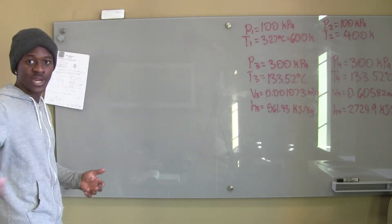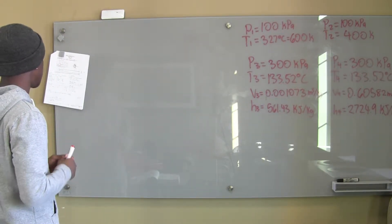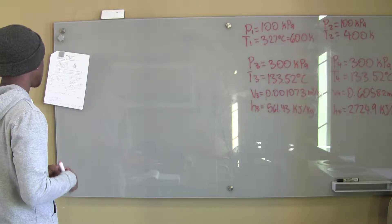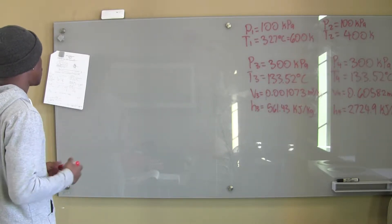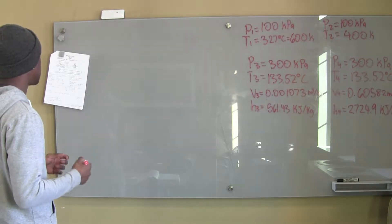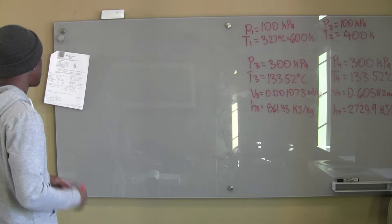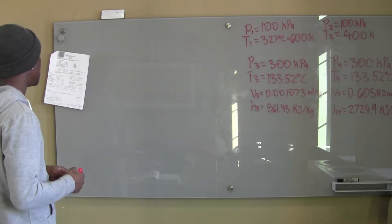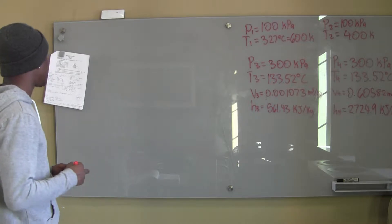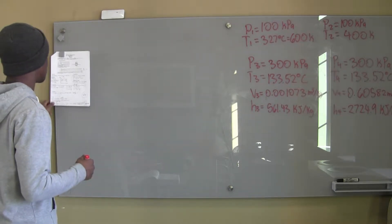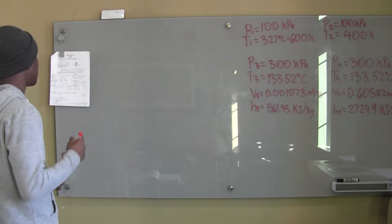It's going to be written in the description, but the problem says: an air stream is used to boil a water stream in a steady flow insulated heat exchanger. The air enters at 100 kilopascals and 327 degrees Celsius and leaves at 100 kilopascals and 127 degrees Celsius. The water enters as a saturated liquid at 300 kilopascals and leaves as a saturated vapor at 300 kilopascals. What is the heat transfer between the air and water streams per unit of air mass flow rate?